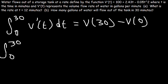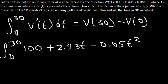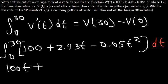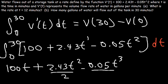So v'(t) is 100 plus 2.43t minus 0.05t squared. The antiderivative of 100 is 100t. And the antiderivative of t to the first power is going to be t squared divided by 2. And the antiderivative of t squared is t to the third divided by 3, evaluated from 0 to 30.